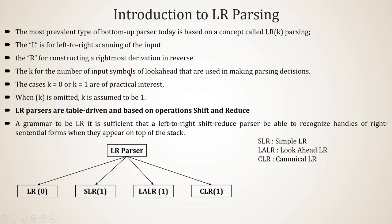The K stands for the number of input symbols of lookahead that are used in making parsing decisions. K equals 0 or K equal to 1 are of practical interest. When K is omitted, K is assumed to be 1. LR parsers are table driven and based on operations shift and reduce. A grammar to be LR, it is sufficient that a left to right shift reduce parser be able to recognize handles of right sentential forms when they appear on top of the stack.